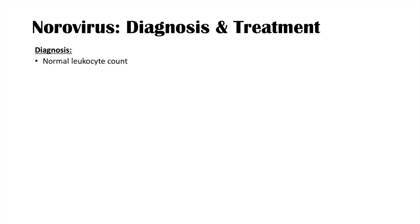When diagnosing norovirus, laboratory investigations often show a normal leukocyte count, though it can be mildly elevated in some cases. The diagnosis is primarily a clinical one: a patient presenting with more vomiting than diarrhea, with symptoms resolving in 48 to 72 hours, is a clinical diagnosis of norovirus. In some cases, real-time qPCR may be used, specifically when looking for the source of a norovirus epidemic, to detect the viral genetics of the norovirus and confirm cases.